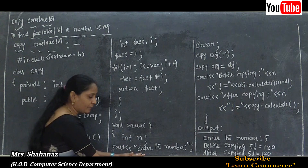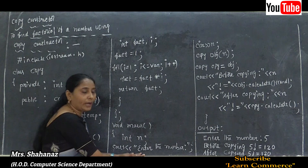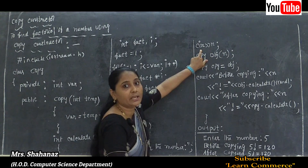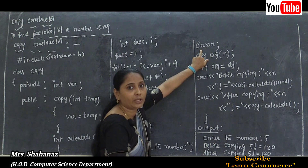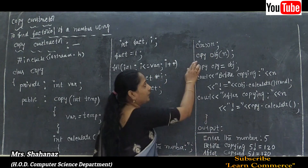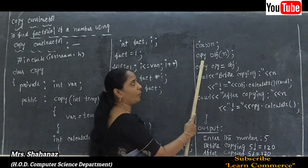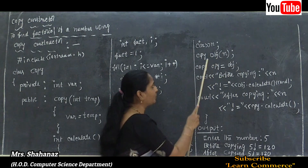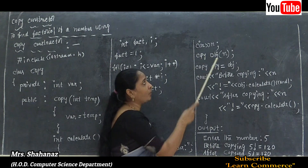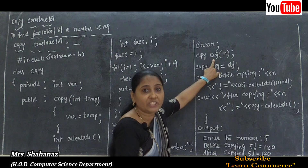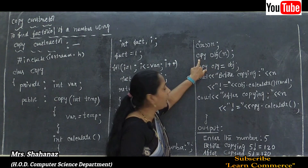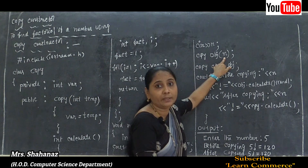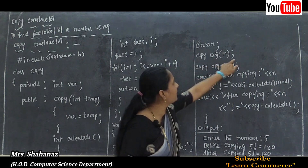We display the message 'Enter the number' and use the cin operation to input a value into n. The next line declares the first object: copy obj(n); — this is the declaration of an object using an argument. The class name is 'copy', the object name is 'obj', and it is initialized with the argument n.